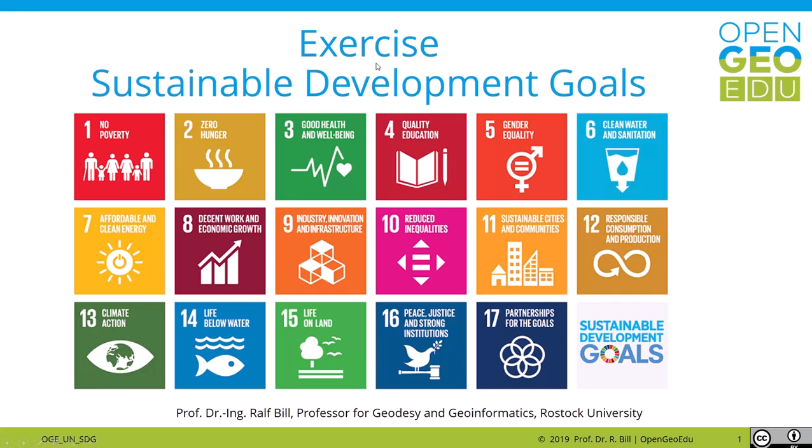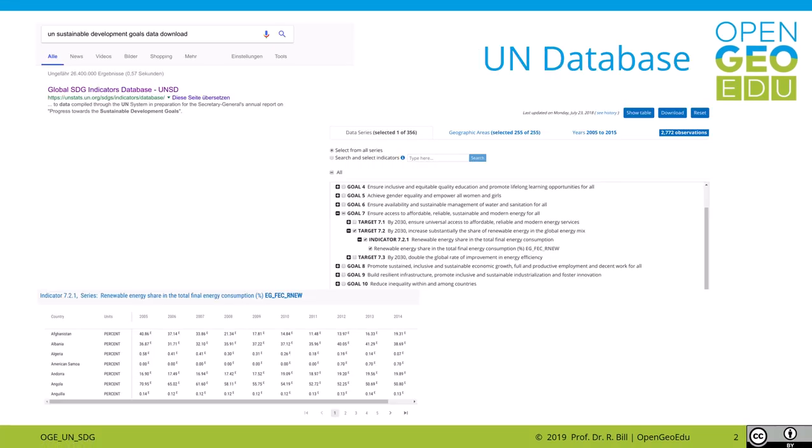First, you have to select a meaningful statistical data set on one of the SDG topics with temporal developments related to the national aggregation level. A comprehensive description of all indicators can be found in the United Nations database. Please read it carefully to understand the meaning of the indicator.